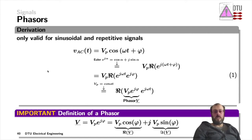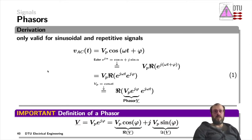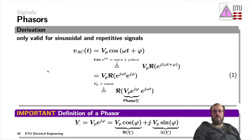So far, we've always looked at representing a signal graphically as a function of time — plotting time on the x-axis and the amplitude of the signal on the y-axis. We can do that in a different way, but that one is only defined for sinusoidal and repetitive signals.